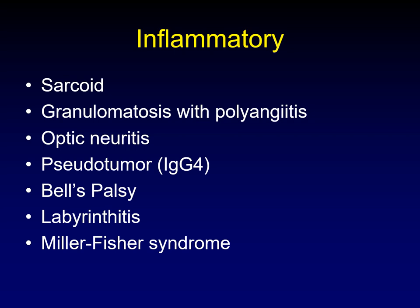What about inflammatory diseases that are not infectious? Sarcoid can do anything. Once you start talking about sarcoid, you might as well talk about granulomatosis with polyangiitis — that is Wegener's granulomatosis. Optic neuritis is probably not that confusing in most instances, but if you had a tumor that originated in the orbit and then had a case of optic neuritis, you can see where that would get confusing.